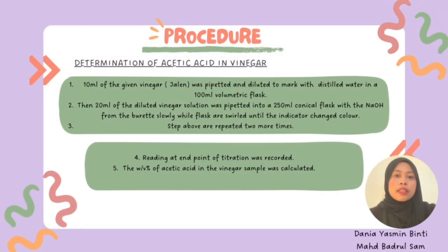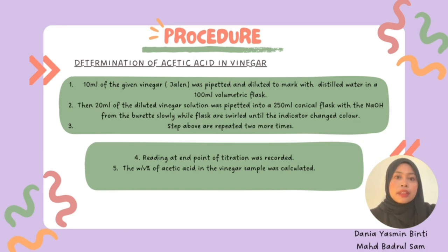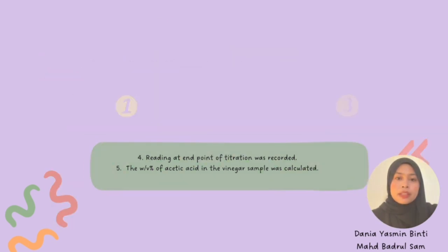For the determination of acetic acid in vinegar: 10 mL of vinegar was pipetted and diluted to the mark with distilled water in a 100 mL volumetric flask. Then 20 mL of the diluted vinegar solution was pipetted into a 250 mL conical flask and titrated with sodium hydroxide from the burette, slowly swirling until the indicator color changed. This step was repeated two more times, and the endpoint readings were recorded.